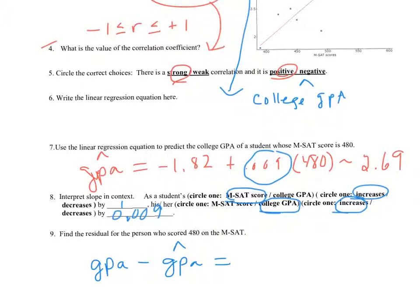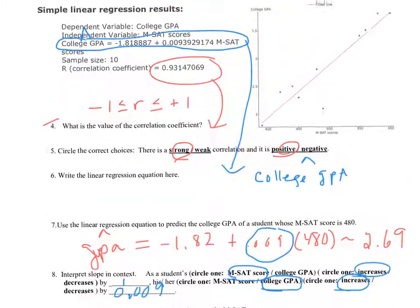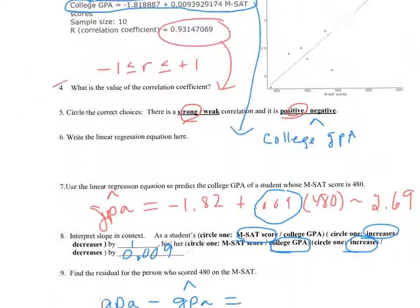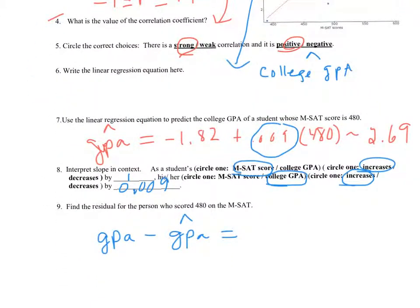So the actual GPA for a student with a score of 480, if you go back up and look at your table, you'll see it was 2.8. Okay, so just enter that and subtract off what we got in question 7. And you can see that the error is about 0.11. So our predicted value is really good. It comes within 0.1 of the true GPA for this student.